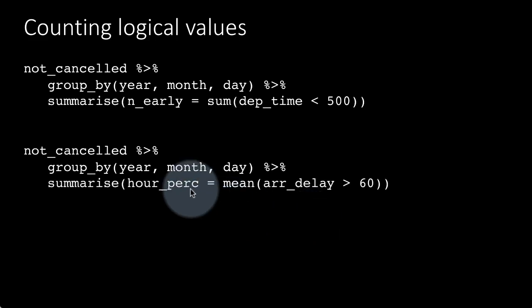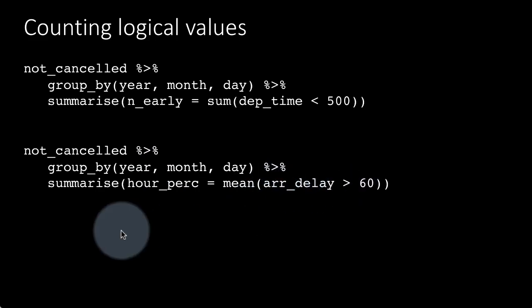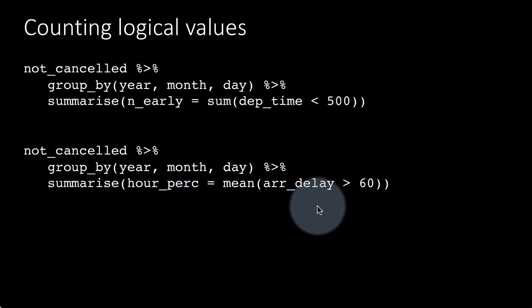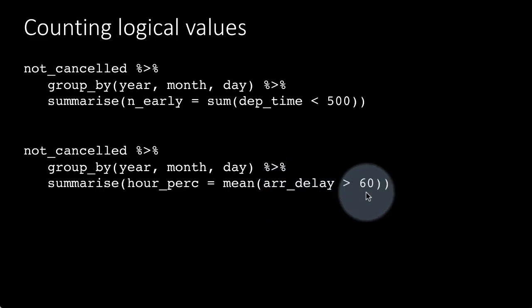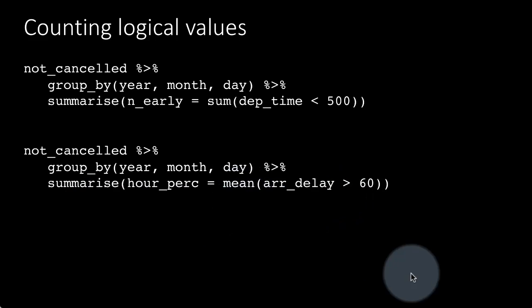Next, we calculate the percentage of flights delayed by more than an hour: hr_pct = mean(arr_delay > 60). The condition arr_delay > 60 is TRUE for all flights delayed more than an hour and FALSE otherwise. Taking the mean of that Boolean vector directly gives the proportion of flights delayed by more than an hour.